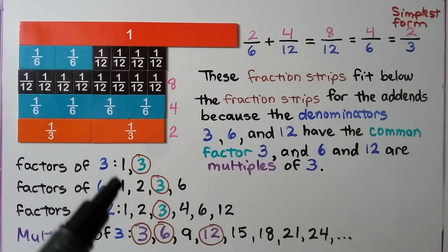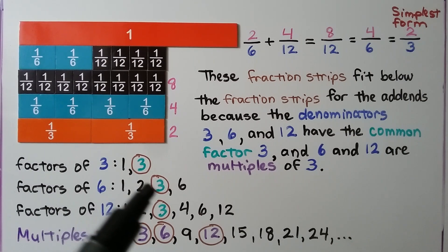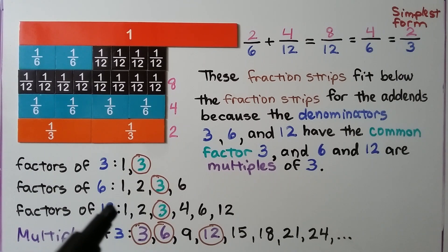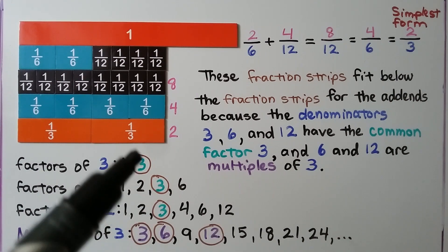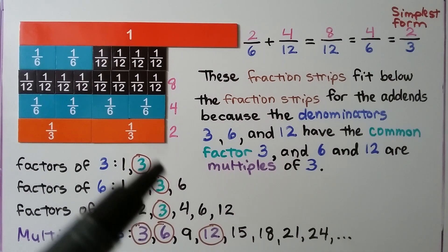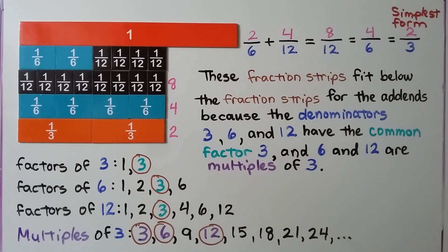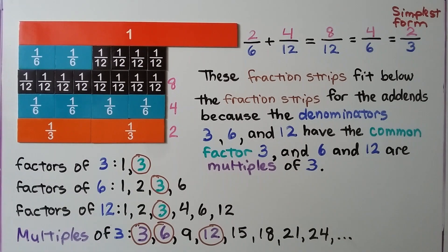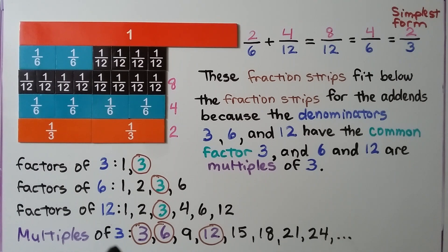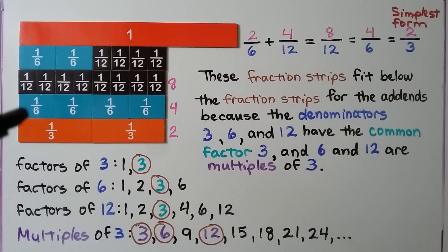The factors of 3 are 1 and 3. The factors of 6 are 1, 2, 3, and 6. The factors of 12 are 1, 2, 3, 4, 6, and 12. We can see that 3, 6, and 12 all have 3 as a common factor. If we wanted to put them into simplest form, we could divide by 3. The multiples of 3 are 3, 6, 9, 12, 15, 18, 21, 24, and so on. The denominators 3, 6, and 12 are all multiples of 3 — that's why they all line up.